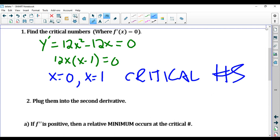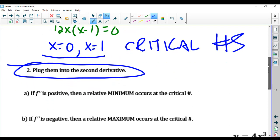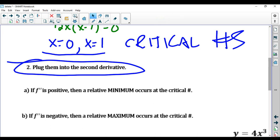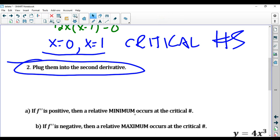Now, normally, in the first derivative test, we'd make the chart to see where the first derivative changes signs, but we're going to use the second derivative test. So the second derivative test, you plug these critical numbers into the second derivative. So let's find out, let's calculate the second derivative.